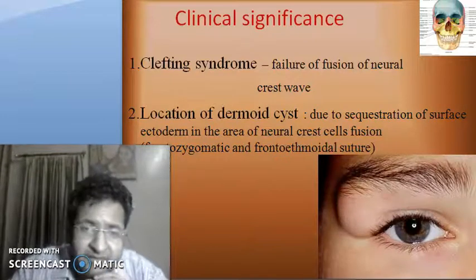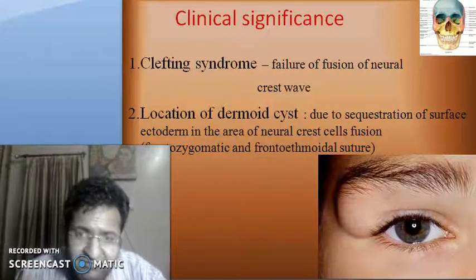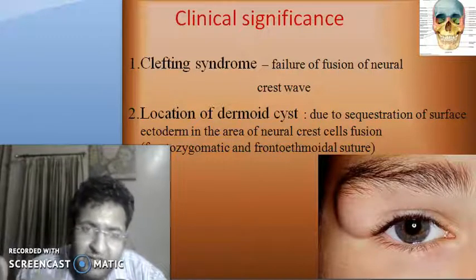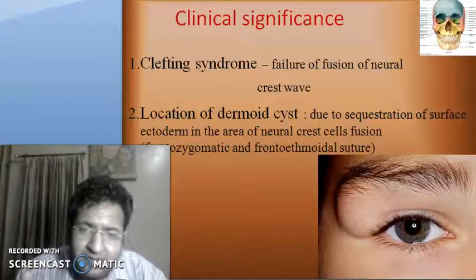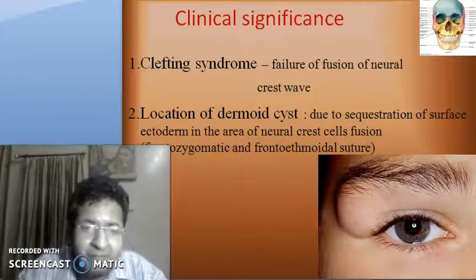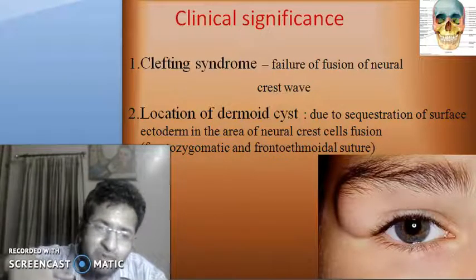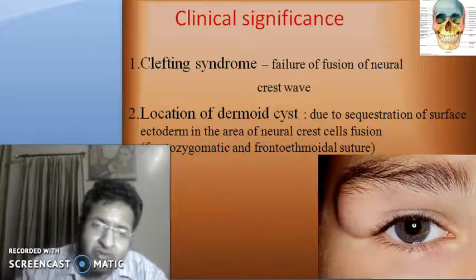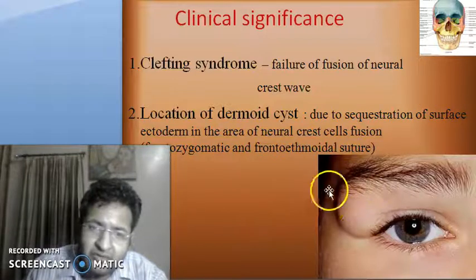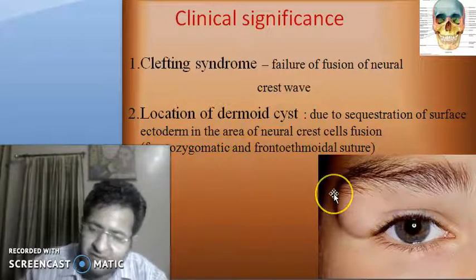The clinical significance of this is the clefting syndrome. When the fronto-nasal processes and the maxillary processes don't fuse with each other, there is a cleft — known as clefting syndrome — that is, a failure of growth. Dermoid cysts occur due to sequestration of the ectoderm into the area of neural crest cell fusion. Because of sequestration of the surface ectoderm at the fronto-zygomatic and fronto-ethmoidal sutures, there is a specific location for these dermoid cysts.